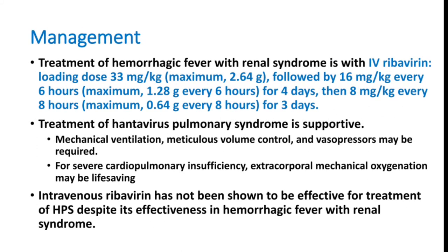Ribavirin dosing: the loading dose is 33 mg per kg body weight, with a maximum dose of 2.64 g, followed by 16 mg per kg every 6 hours with a maximum dose of 1.28 g every 6 hours for 4 days. Then 8 mg per kg every 8 hours, with a maximum dose of 0.6 g every 8 hours for 3 days.